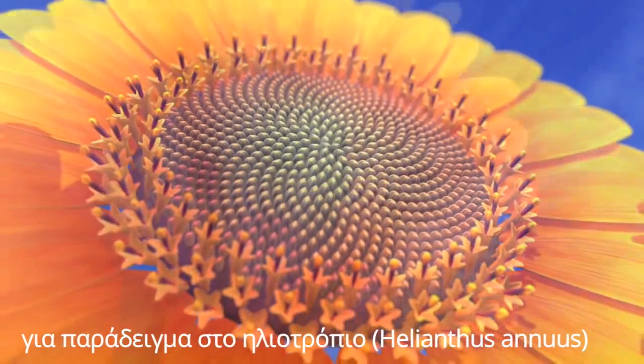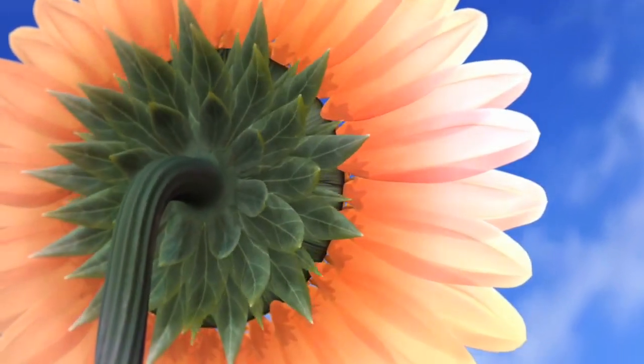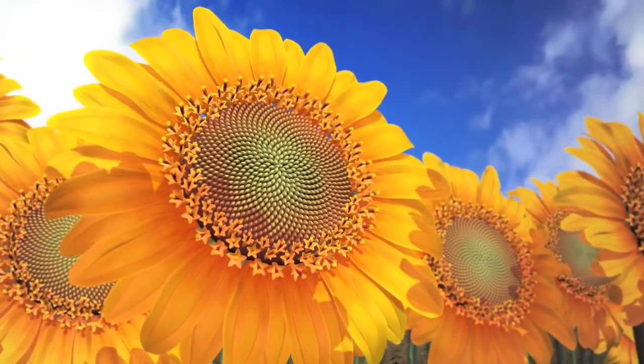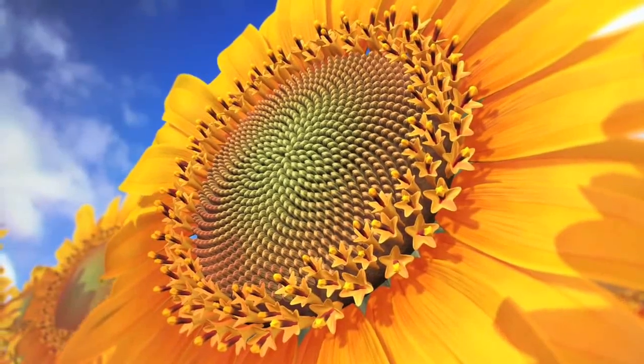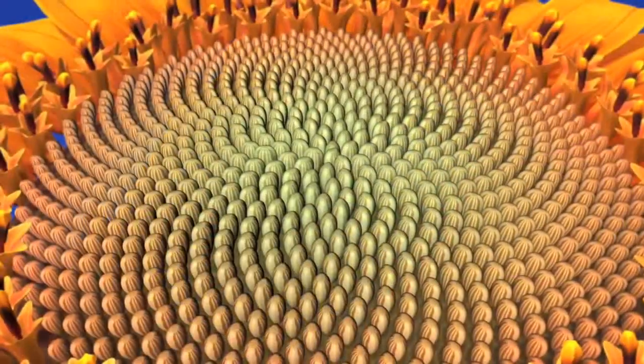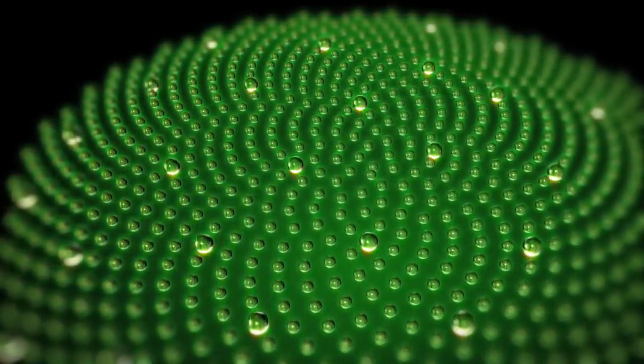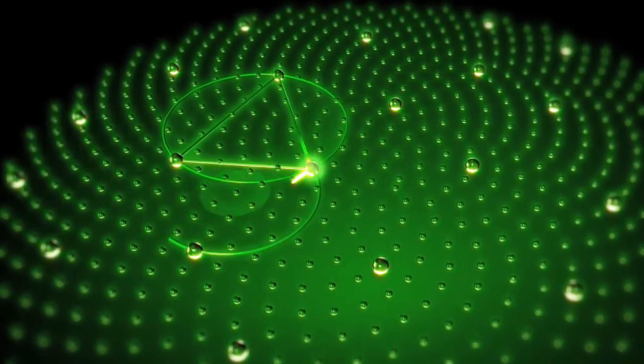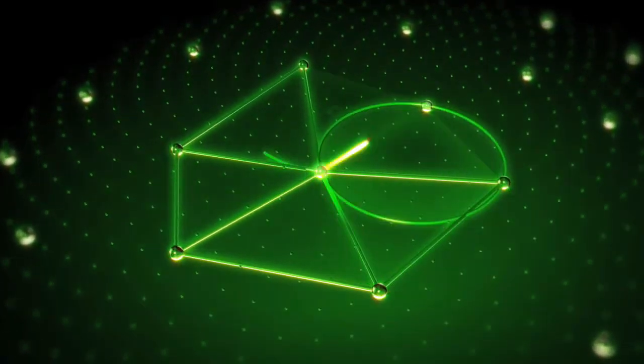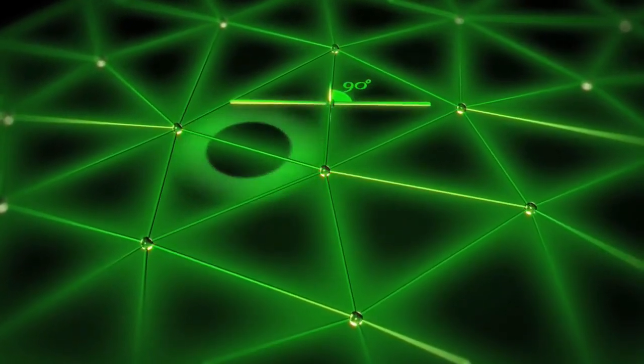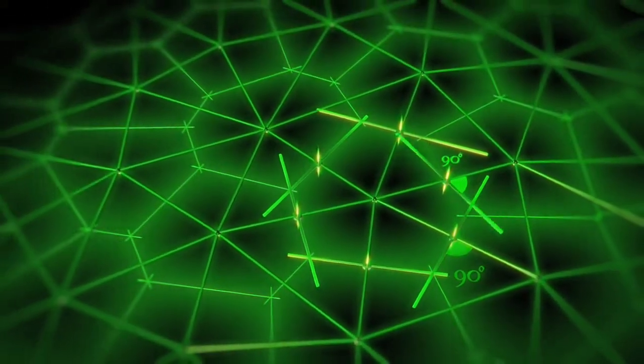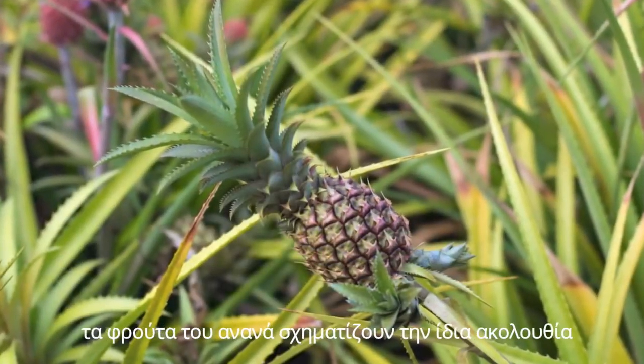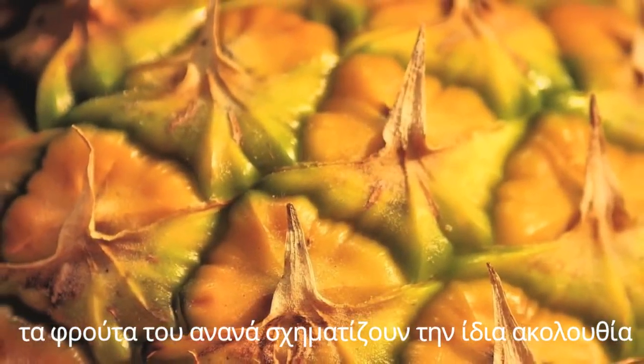Take, for example, the sunflower. The fruitlets of the pineapple create the same spiral based on the sequence. The pine cone does the same.